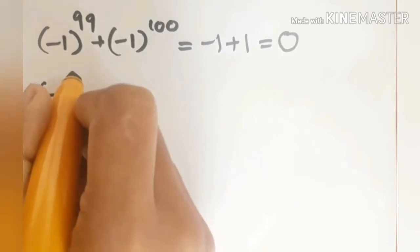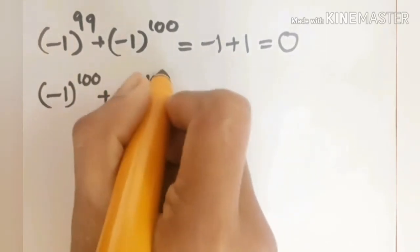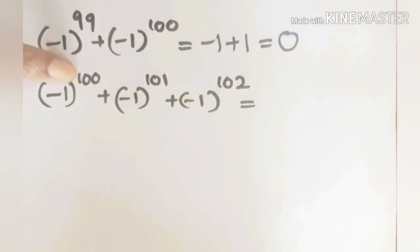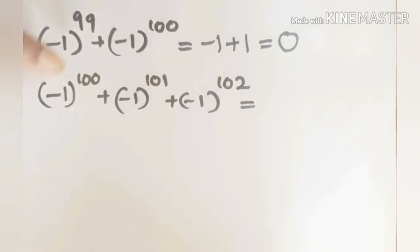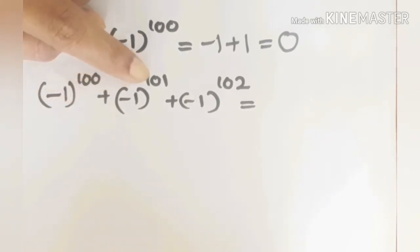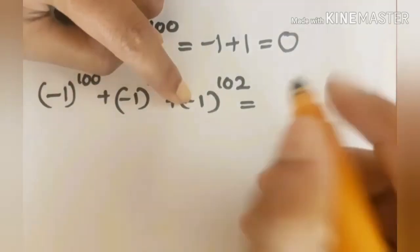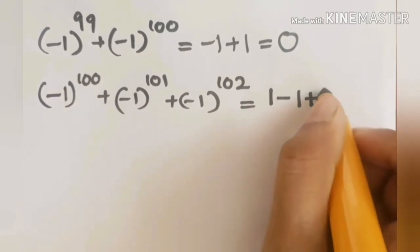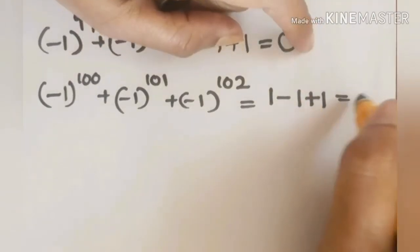Next problem: minus 1 raise to 100 plus minus 1 raise to 101 plus minus 1 raise to 102. 100 is even so that is 1; 101 is odd so that is minus 1; 102 is even so that is 1. So 1 minus 1 plus 1 equals 1. The answer is equal to 1.